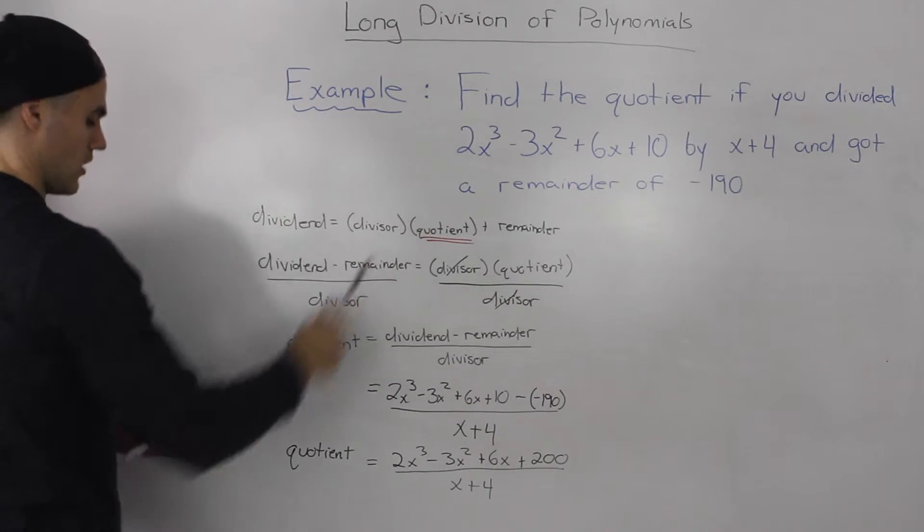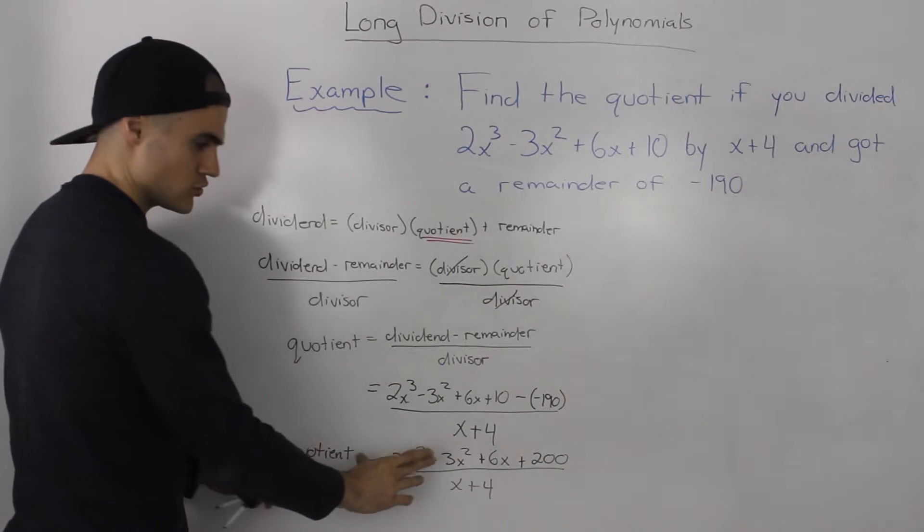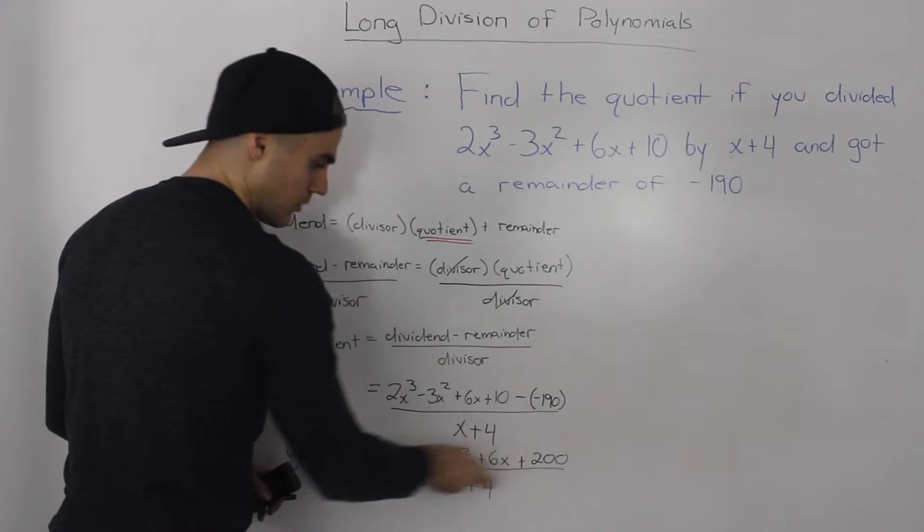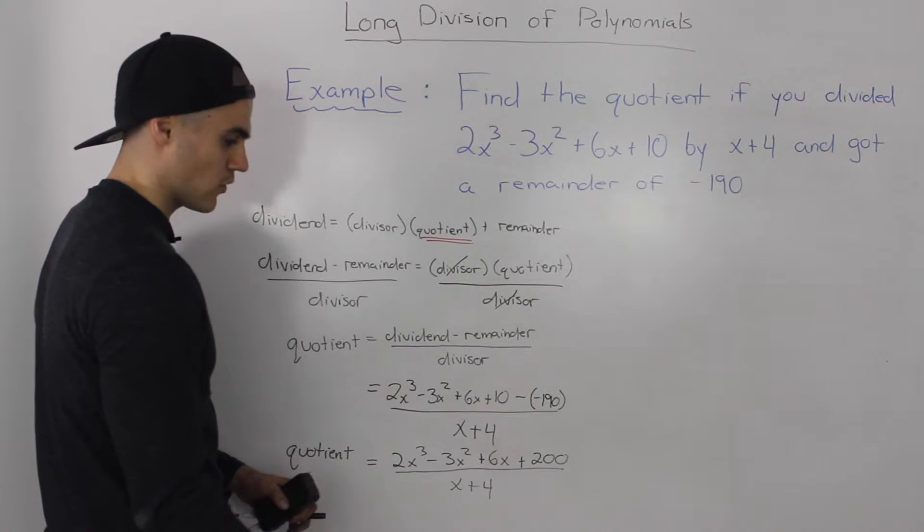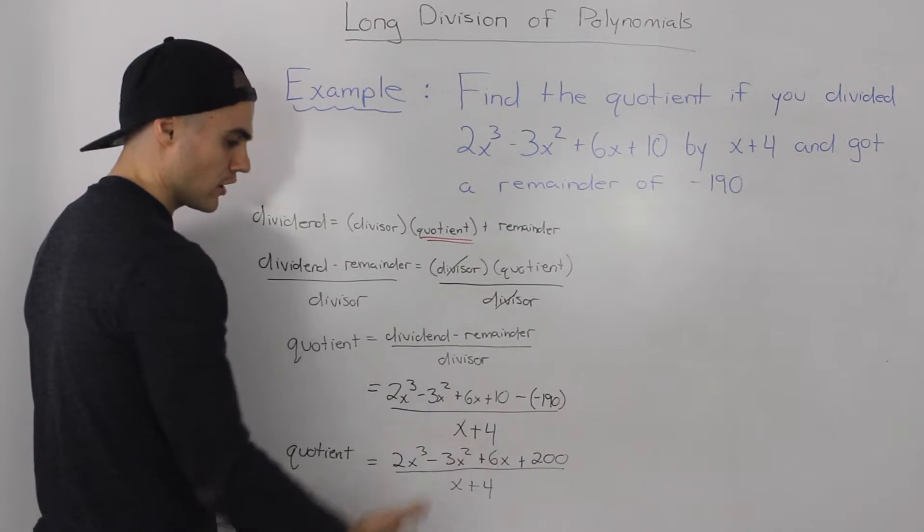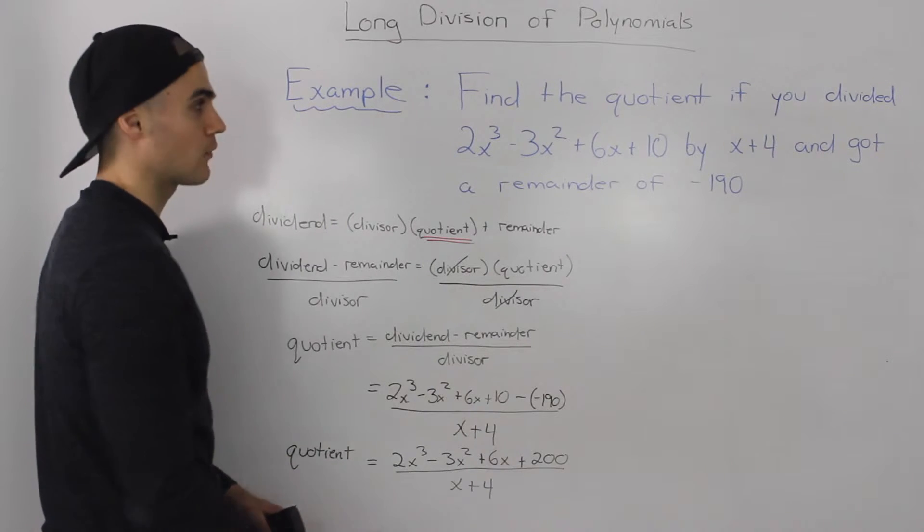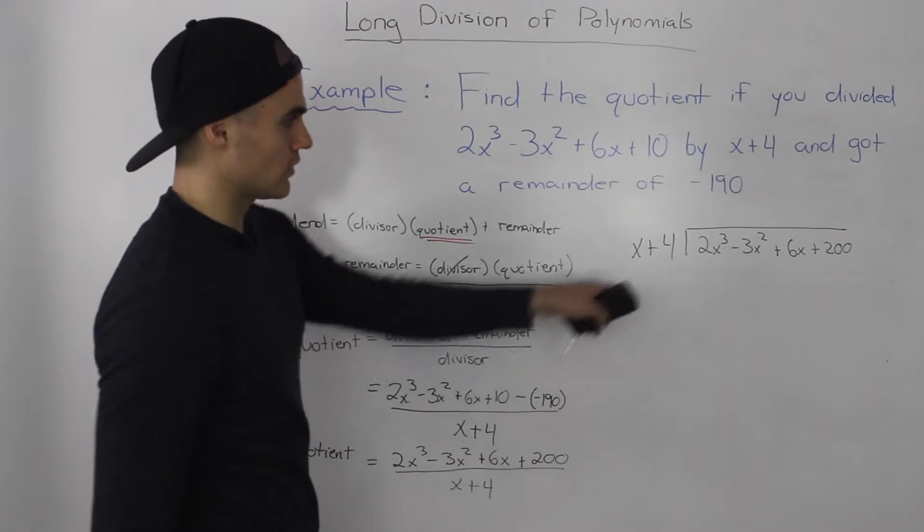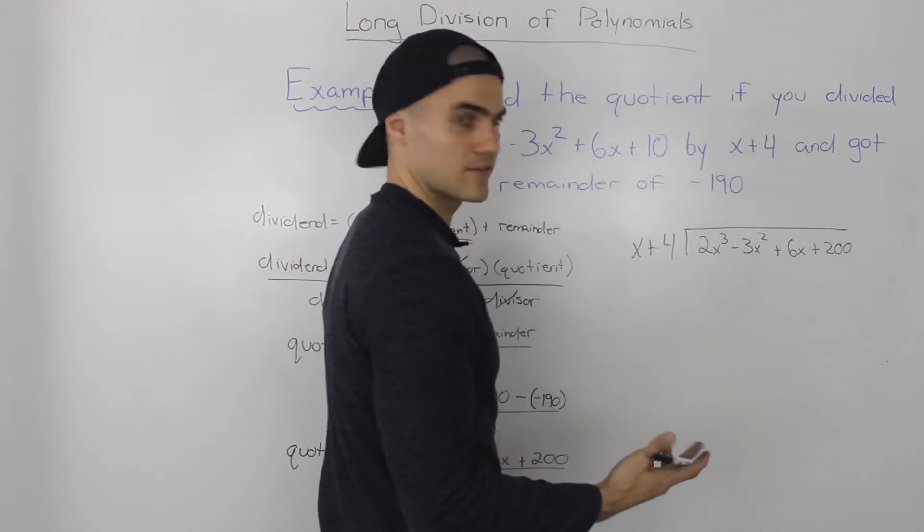Notice how this quotient now is in terms of division. It's basically this new polynomial in the numerator divided by x plus 4. So we can just perform long division on that and then whatever we get the answer would be our quotient for our original question. Taking this division here and rewriting it in this form, we can perform long division.